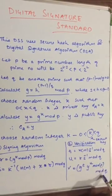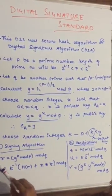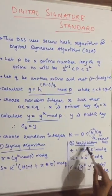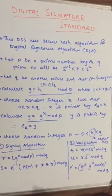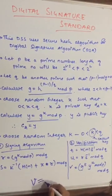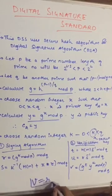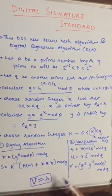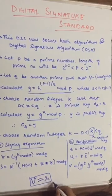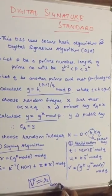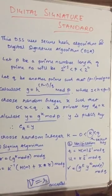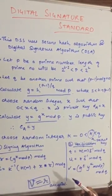The verification algorithm formulas are: t is equal to h(m) into s inverse mod q; u is equal to r into s inverse mod q; and v is equal to g raised to t into y raised to u, mod p, whole mod q. If we compute r and s using the signing algorithm and t, u, v using the verification algorithm, we should get v equal to r, and the message will be accepted.